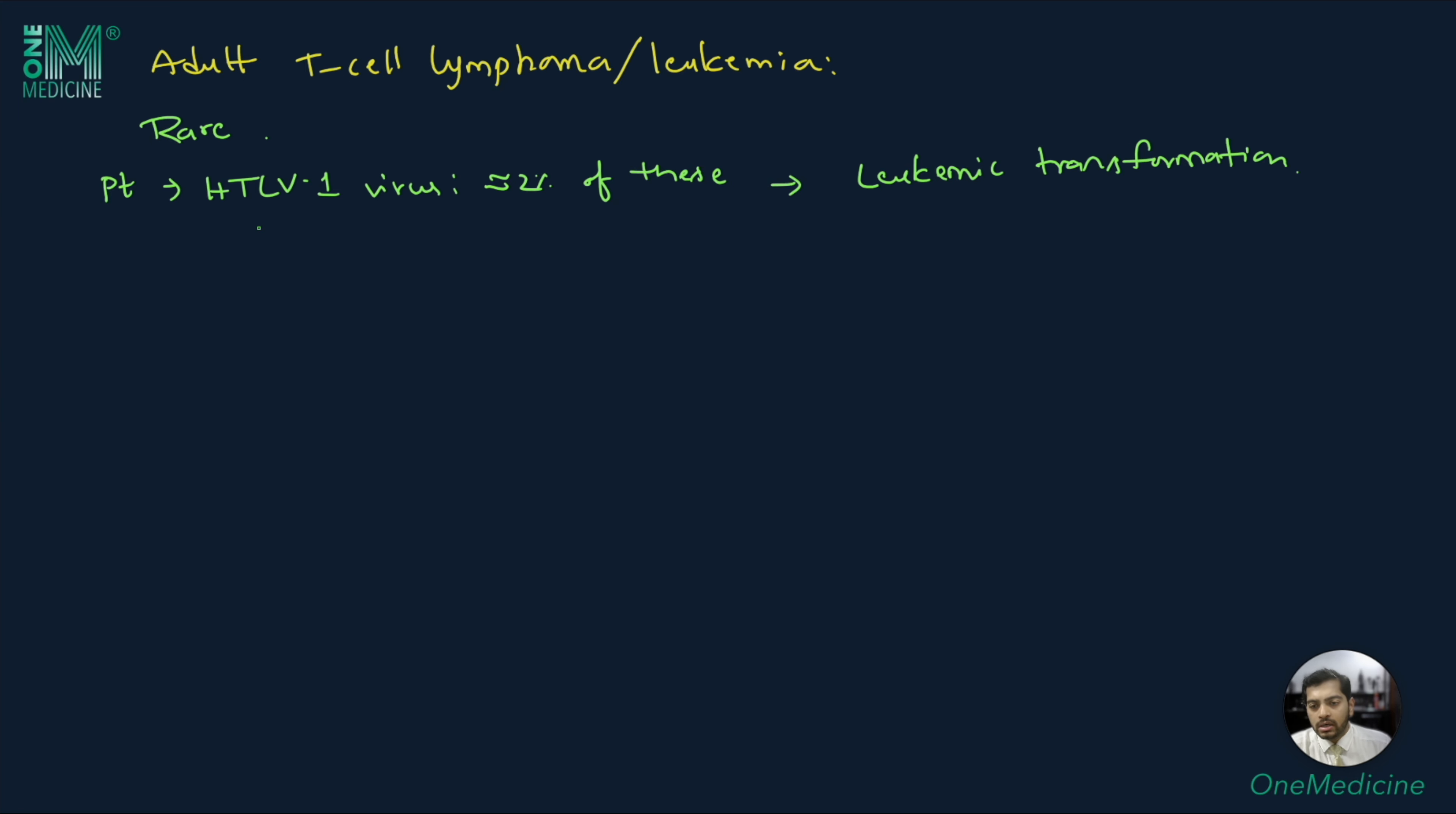Unrelated to the adult T cell lymphoma, some patients with HTLV1 virus infection can have spinal involvement leading to spastic paraplegia. A characteristic clinical feature of adult T cell lymphoma is high WBC count, high lymphocyte count with no anemia. The tumor cells are CD4 positive T cells with cloven hoof or flower-shaped nuclei.